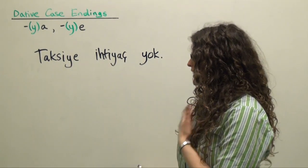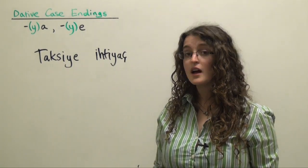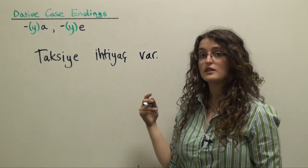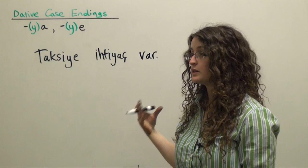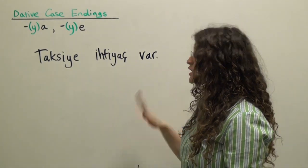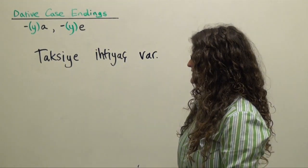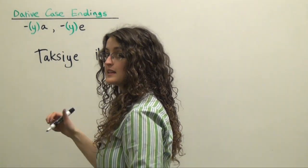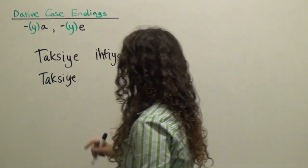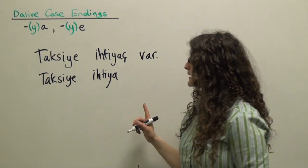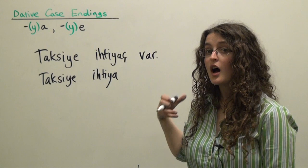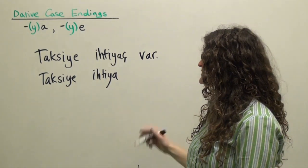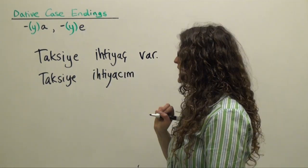What if we want to say, not generally 'there is a need for a taxi' or 'there is no need for a taxi,' but 'I need a taxi' or 'I don't need a taxi'? All we're going to change is that we're going to add the possessive suffix to the end of 'ihtiyaç,' the word for need. So instead of saying 'the need for a taxi exists,' we're going to say what literally translates as 'my need for a taxi exists.' We'll start again with the Turkish word for taxi in the dative case because it's the needed object.